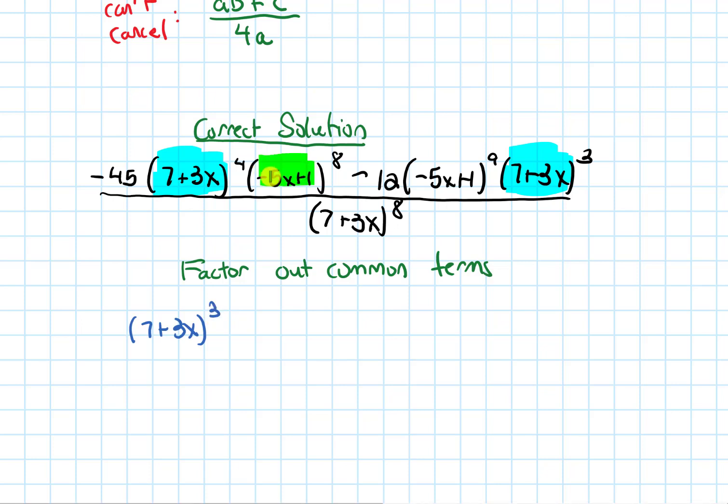And then I see -5x+1. There's some of them here, eight of them there. There's nine of them here, so I can definitely factor out eight of them. -5x+1 to the 8. And there's something else that's common. If we look at the -45 and the -12, I can divide both of those by 3. In fact, I'm just going to factor out a -3.